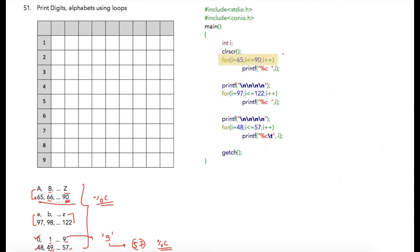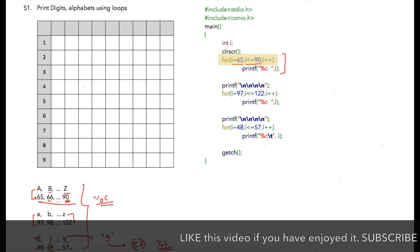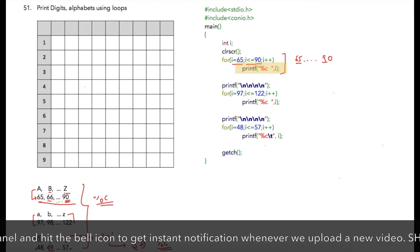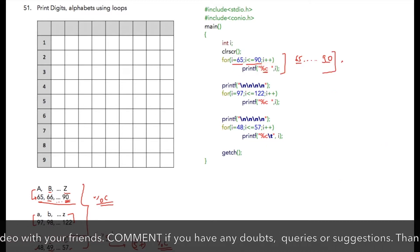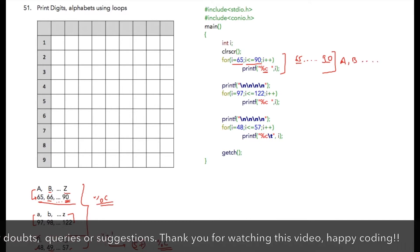In this first for loop, I have initialized variable i to 65 and condition is i less than or equal to 90. So this loop will iterate from 65 till 90 and all these values are printed as percent c, so for this section capital A, B, C and so on till Z will be printed.